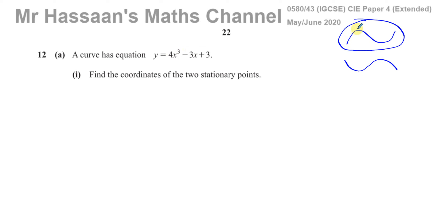The stationary points are the points at which the gradient is going to be 0. If we draw a horizontal tangent, it touches the curve at the two turning points. The stationary points are the two places where the curve turns, and those are the coordinates we're trying to find in this question.